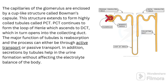The capillaries of the glomerulus are enclosed by a cup-shaped structure called Bowman's capsule, which extends to form the highly coiled proximal convoluted tubule. The proximal convoluted tubule continues to form the loop of Henle, which ascends to the distal convoluted tubule, which in turn opens into the collecting duct. The major function of the tubule is reabsorption, occurring through either active or passive transport. Secretion by tubules also helps in urine formation without affecting the electrolyte balance. Please refer to the images provided to easily understand and relate these structures.